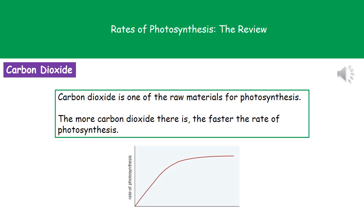The second factor is carbon dioxide. Carbon dioxide is one of the raw materials needed for photosynthesis to take place, so the more carbon dioxide there is, the faster the rate of photosynthesis — up to a point. Just like with light, as we increase the carbon dioxide the rate of photosynthesis will increase, but where that line starts to level off, something else is limiting the rate. It's no longer the lack of carbon dioxide that's limiting photosynthesis — it's something like the amount of light present.